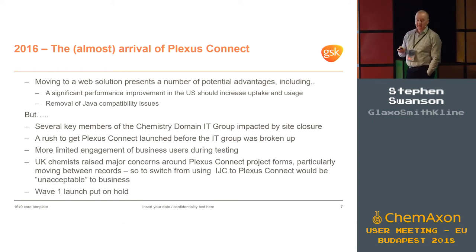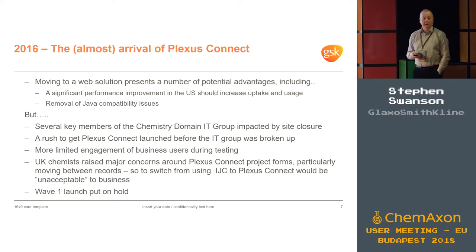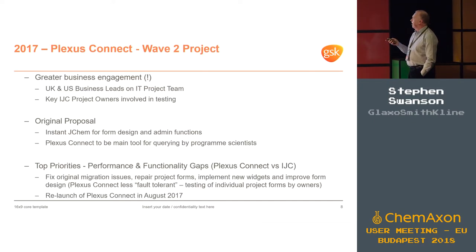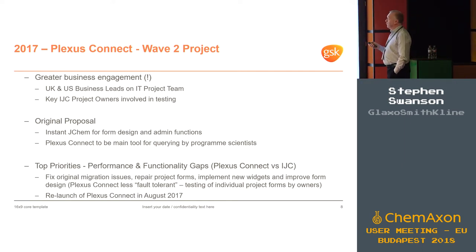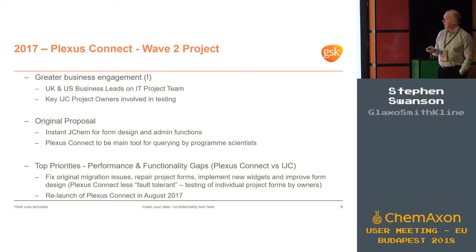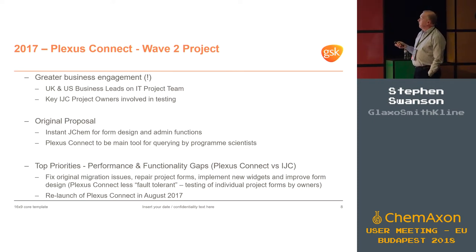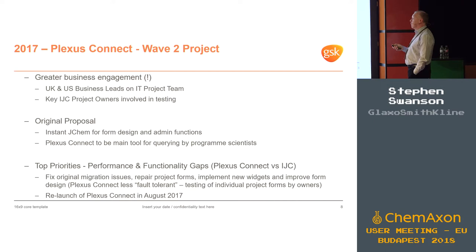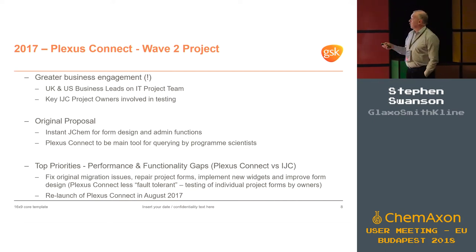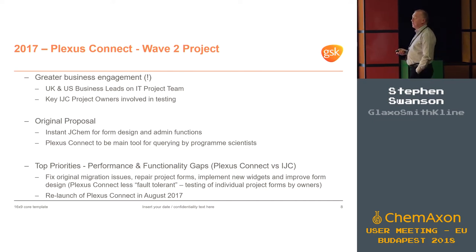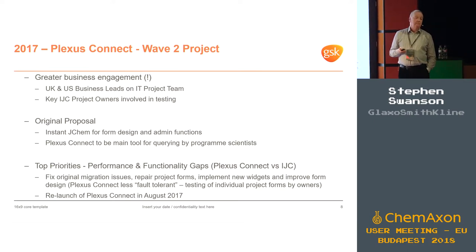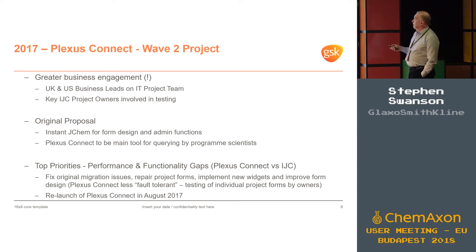However, this project costs money, and at the end of the year with Plexus not launched, the question was what do you do with all that money? We did want Plexus Connect if we could get things right. So I went to the IT group, and they made an absolute condition: if we're going to run the project again, business people have to be more closely involved. So we got two chemists — one from the UK, one from the US — to sit on the IT project team, involved in the decision making. The form owners were also getting into the testing right away.